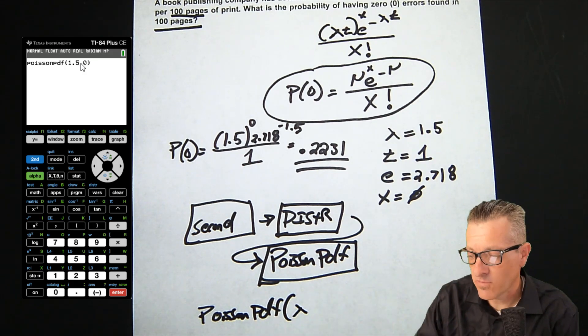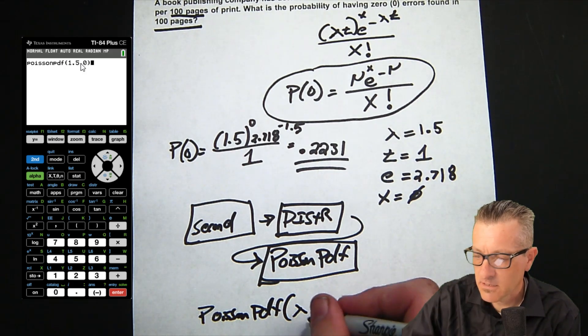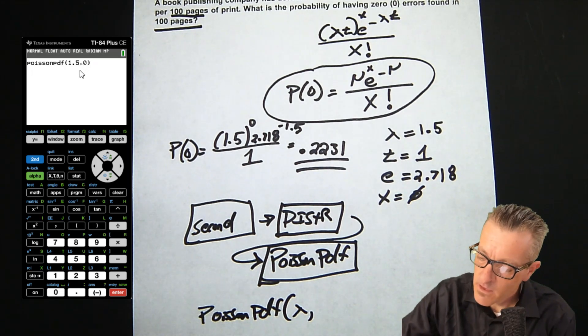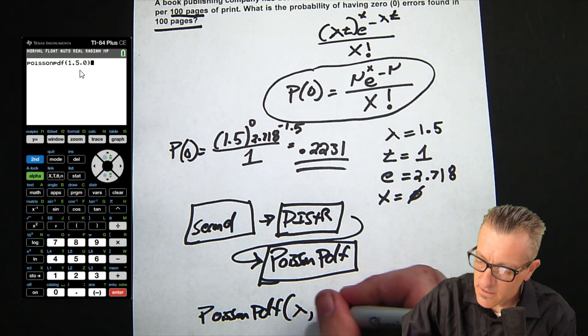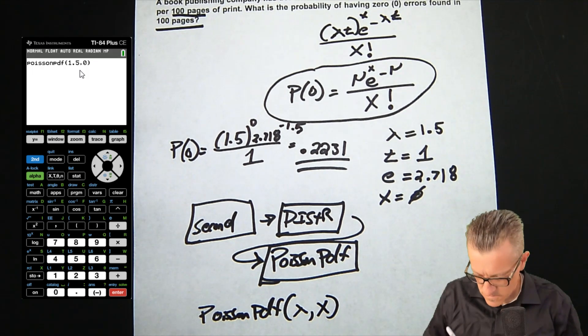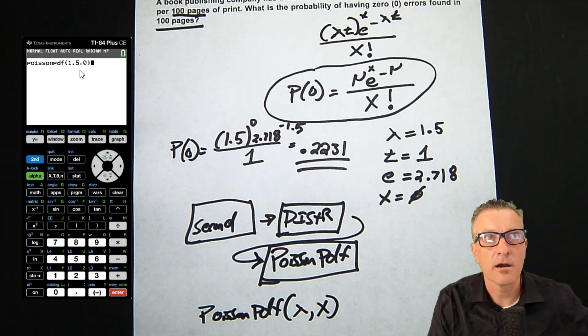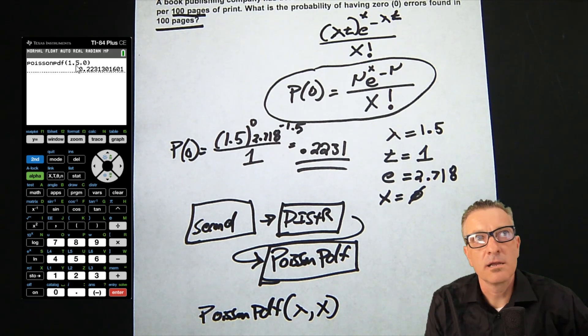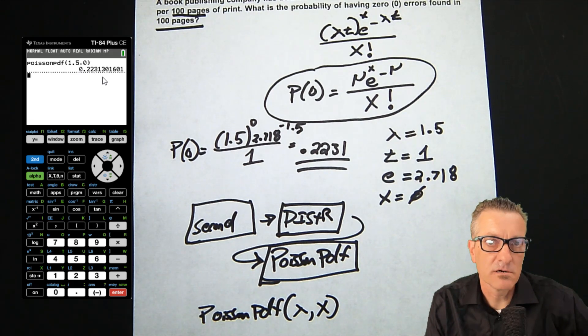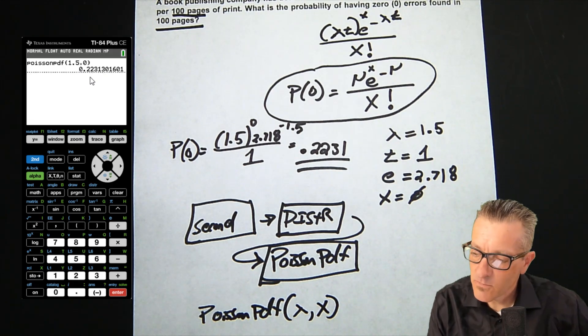So it's Poisson PDF, then our lambda or Poisson parameter, comma, then our X, and then the close parentheses—otherwise you won't get the answer. I hit enter and received 0.2231, which is our answer. It's the same one as we received by working it out.